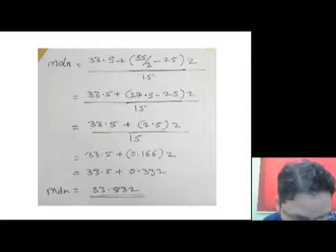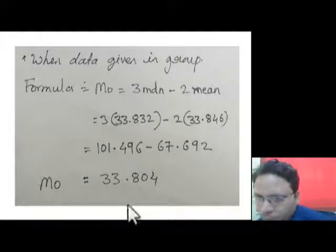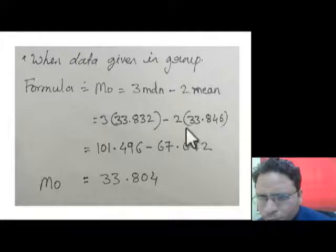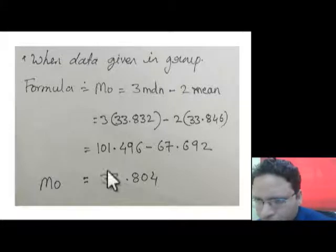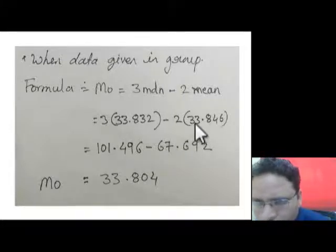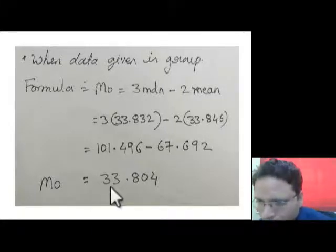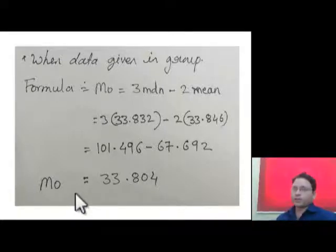So Mode = 3 × (median value) − 2 × (mean value). Solving this: 3 multiplied by the median gives one result, and 2 multiplied by the mean gives another. Then we simply subtract, and we get the mode value of 33.804. It is that simple.